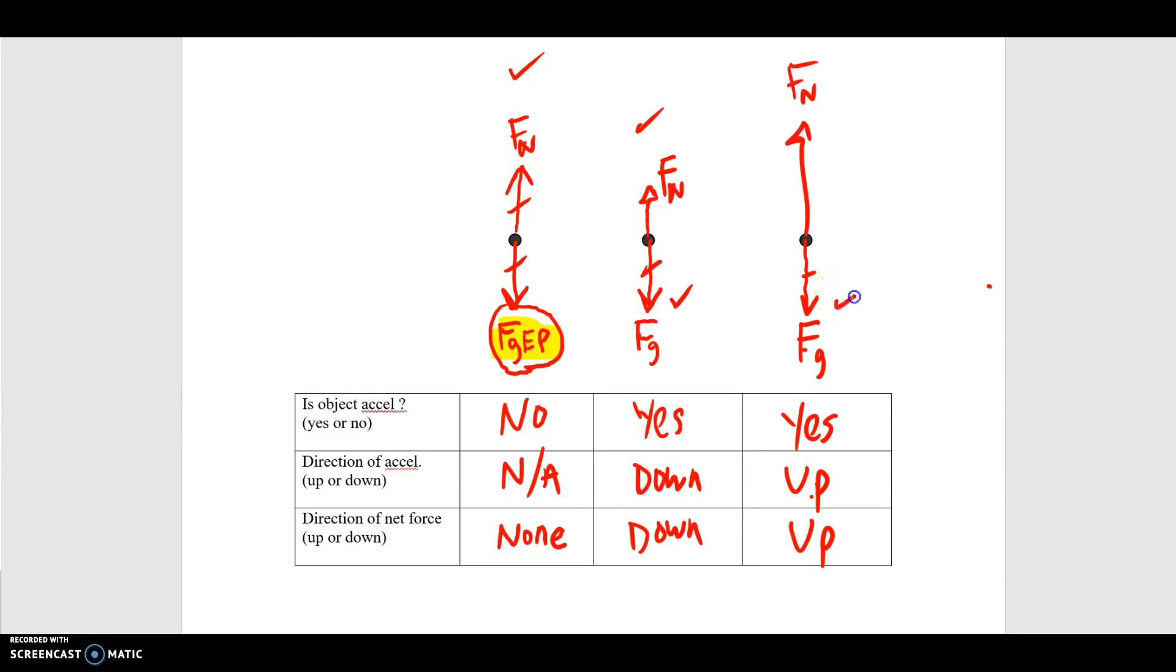When they start low and push up, gravitational force doesn't change compared to the other situations. But momentarily, the scale reads a higher value, and that must be because the object is accelerating upwards. The upward force, which is the normal force, must be greater than the downward force.